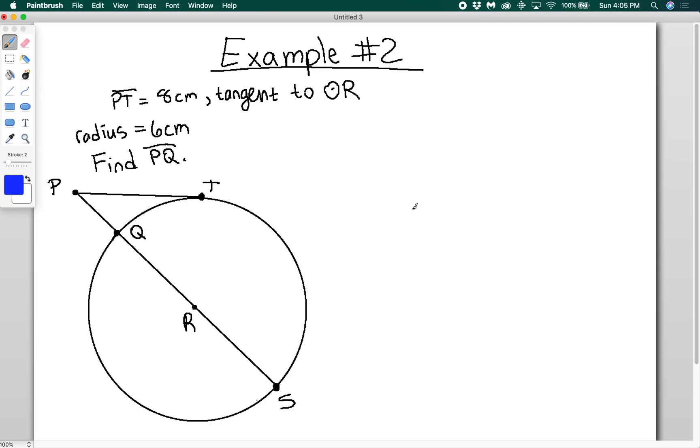One more example we'll do. Let's say I have a circle drawn like this, where segment PT is 8 centimeters. The radius is 6 centimeters, so this is 6 centimeters and this is 6 centimeters. I want to find PQ. If I want to find PQ, I know that 8 centimeters squared has to be equal to—let's call this segment X—X times X plus 12 centimeters, because it's going to be the full length of the chord.